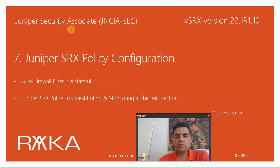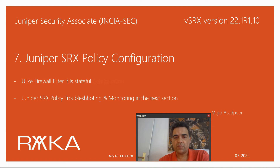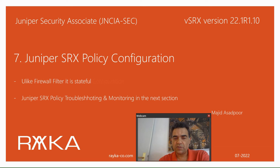Welcome to another video of the Juniper Security Associate course. In this section I will talk about Juniper SRX policy configuration, which is the main task of a Juniper SRX device — to control traffic between zones. Unlike firewall filters, it is stateful, meaning you only need to permit traffic from the initiator zone to the destination zone; return traffic will be automatically permitted. Juniper SRX policy troubleshooting and monitoring will be discussed in the next dedicated section because of its importance.